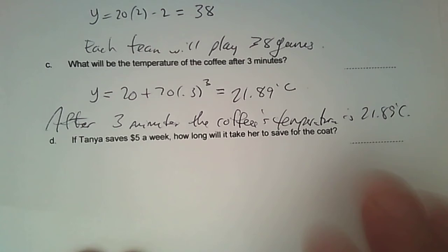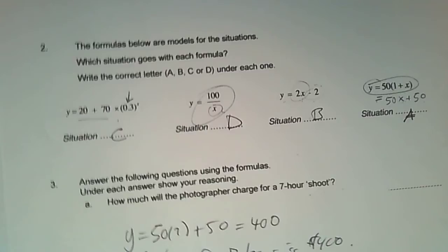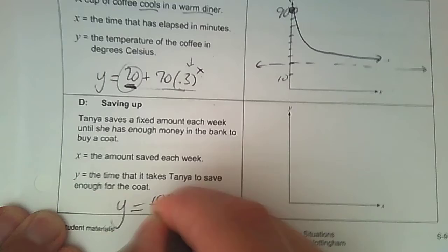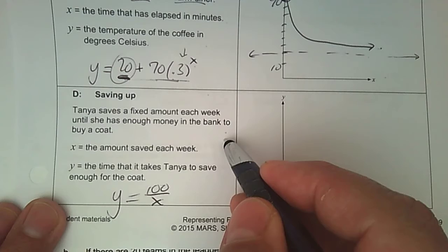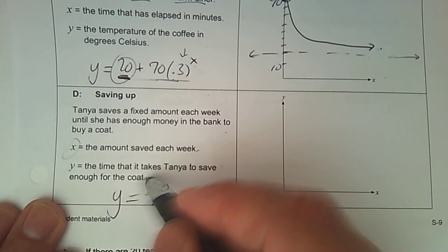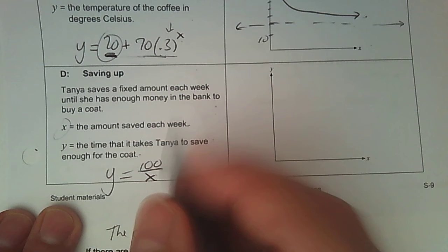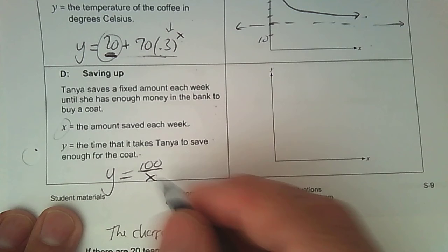Last one. So obviously, I know the last one's probably going to match up with this one, right? 100 divided by X. So why is that? So let's go here, and I'm going to write it in, trust it, and then be able to graph it. So it says, Tanya saved a fixed amount each week until she has enough money in the bank to buy a coat. And so X is the amount saved each week, the time that it takes Tanya to save enough for the coat. So if she saves nothing, she doesn't get a coat. If she saves a dollar each week, how long would it take her? 100, right? Weeks. If she saved $100 a week, it would just take her one week. So this is going to describe that coat.